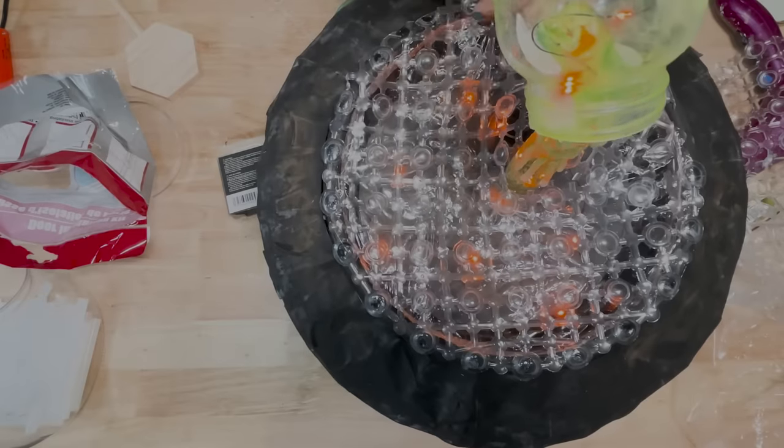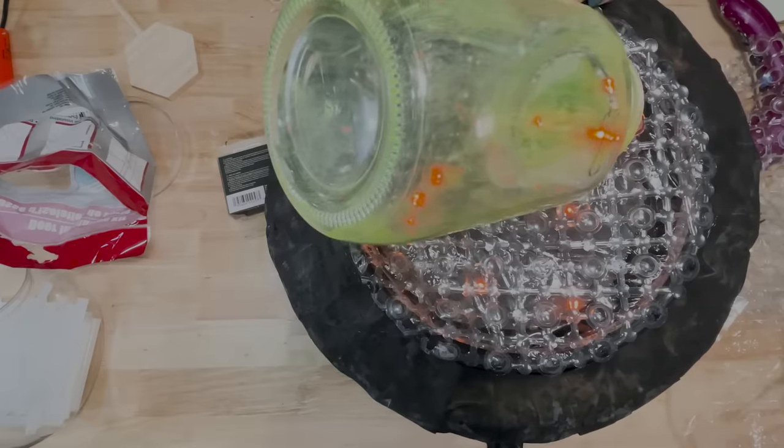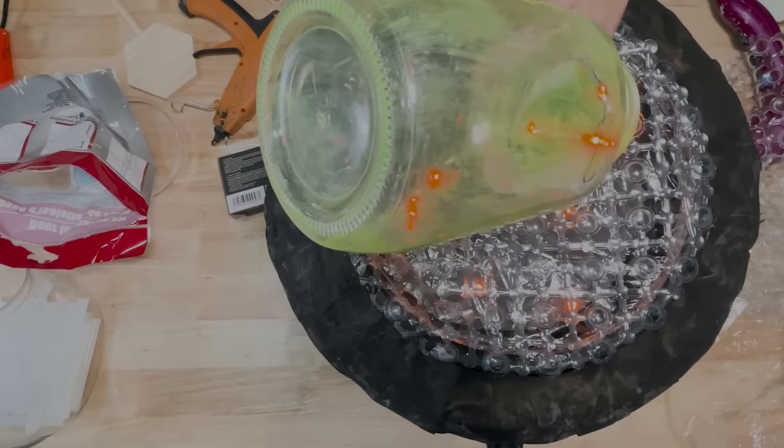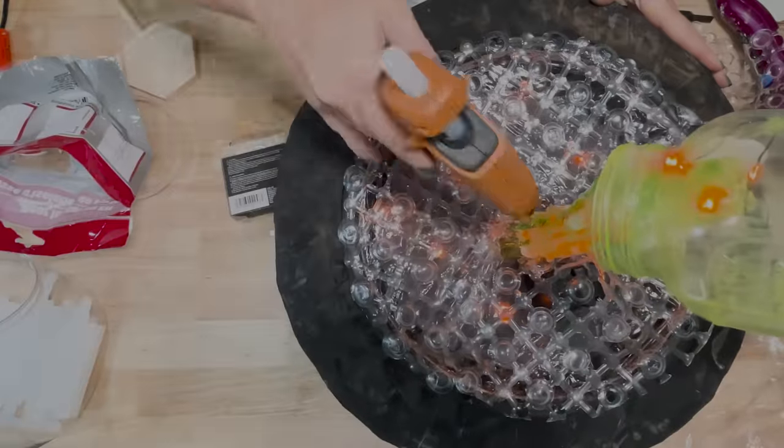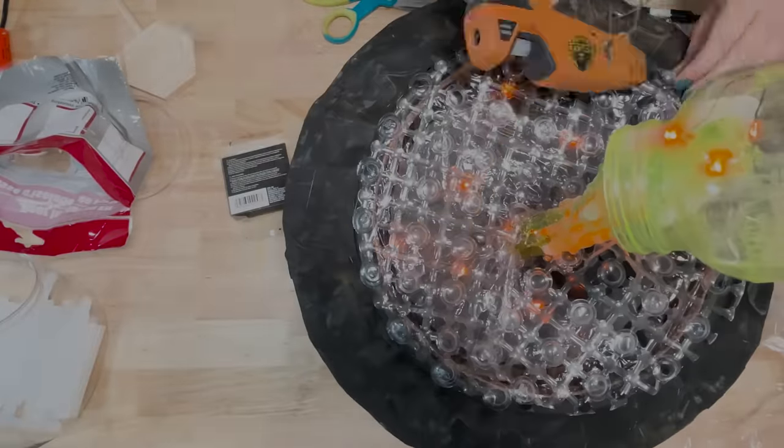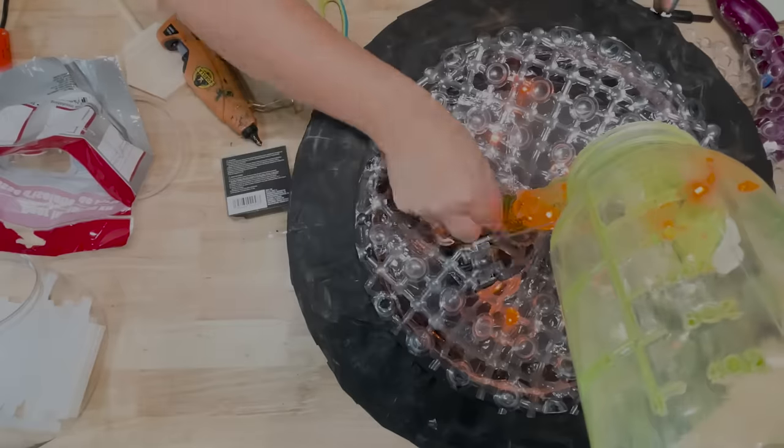I think it would be really cute if these were painted green so it kind of matched the tube, but I didn't think about that until later on unfortunately. And then I did add a few more layers of drips onto the bubble mat so that it all kind of molded together.